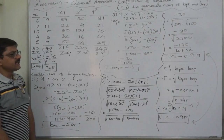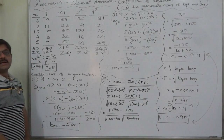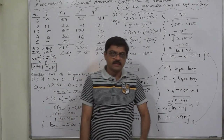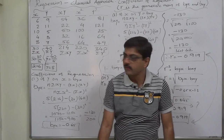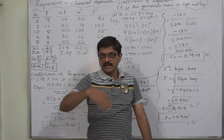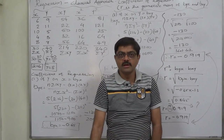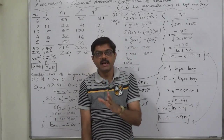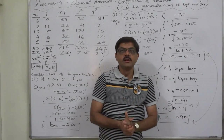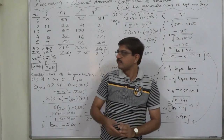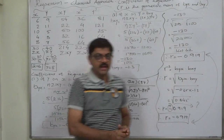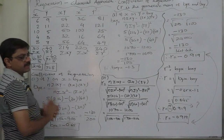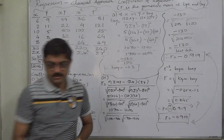This was the easiest possible way to calculate the coefficients of regression — Part 1 of the solution of this case. In the next lecture, we will cover finding the equations of the lines of regression for the same case, using the four results: x-bar, y-bar, byx, and bxy. Thank you very much.